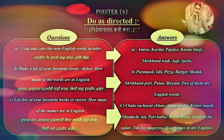Pointer fourth. Do as directed. Nirdesha Nusar Kruti Gara. First question: Find and copy the non-English words in the letter. Patratil Gair Ingraji Shabda Shodha Aani Liha. Non-English words: Aamras, Kurudai, Papdya, Kandabhaji, Shrikhandavadi, Aaji and Azoba.